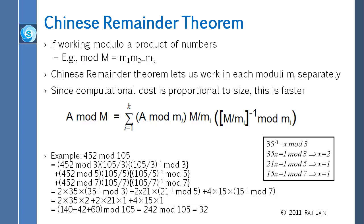There is a better way to find this x — does anybody remember how you find an inverse? There was a tabular method we talked about. The real method to find the inverse is the tabular method. You would write down a table with 3 and 35 and do the whole table; within 1 or 2 rows you will get 2 and you will know that the inverse is 2. Similarly, you need to find out 21 inverse mod 5 and 15 inverse mod 7.